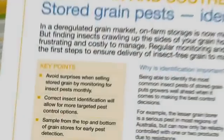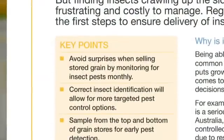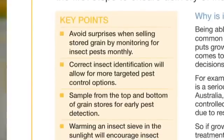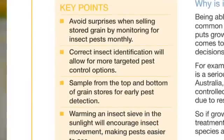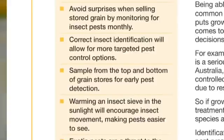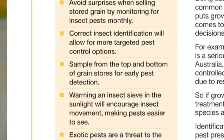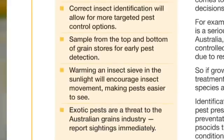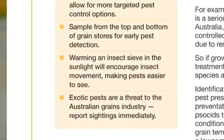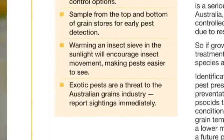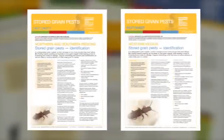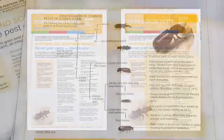To recap the key points: to ensure we don't have any surprises at outloading we need to check our grain monthly. We need to be sure we identify our insects correctly so we can target the best control mechanism to put in place. We need to check from the top and the bottom of the silo and do that monthly. And if we have anything that surprises us and we're not sure what it is, get it checked and identified correctly. This publication also has some great photos of the insect pests for identification.